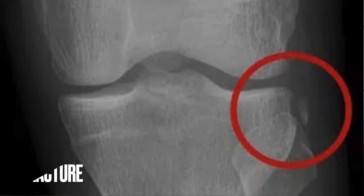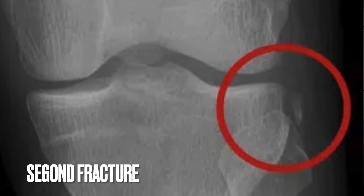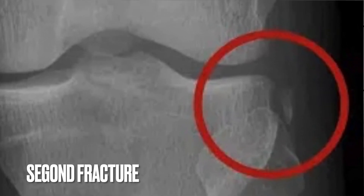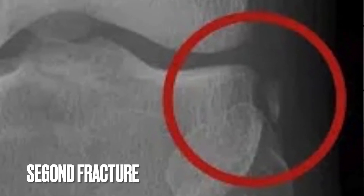The AP view can potentially show Segond fractures. This is an avulsion fracture from the lateral tibial plateau, and it is very highly suggestive of an injury to the ACL if seen on x-ray.